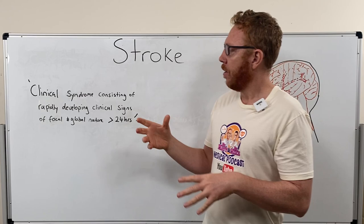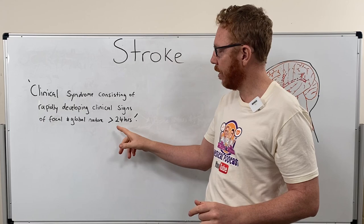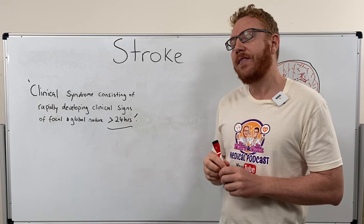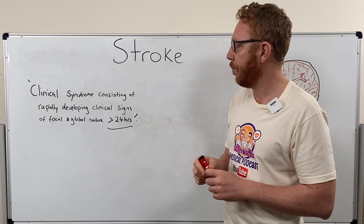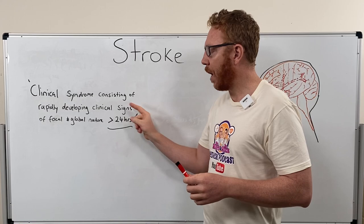The WHO says that a stroke is a clinical syndrome consisting of a rapidly developing clinical signs that can be focal and or global in nature, lasting greater than 24 hours. So let's break this definition down. The first thing to highlight is 'greater than 24 hours' — if you had neurological signs and symptoms that disappeared within less than 24 hours, it wouldn't be a stroke; it would be something called a TIA, or transient ischemic accident. So the greater than 24 hours is important.